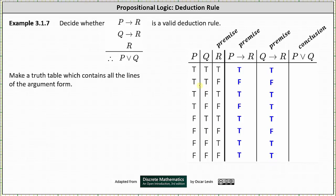For the last column we have the disjunction p or q. p or q is false only when p is false and q is false; otherwise p or q is true. Analyzing the first two columns, p is false and q is false in row seven and row eight — in these two rows p or q is false, and in all other rows p or q is true. The column for p or q is: true, true, true, true, true, true, false, false.